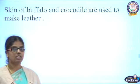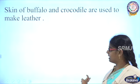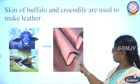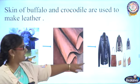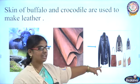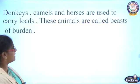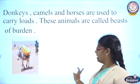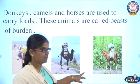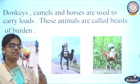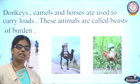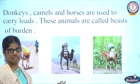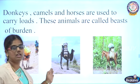From the skin of buffalo and crocodile, leather is prepared. From that leather we get bags, purses, belts, and jackets. Some animals like donkey, horse, and camel help us carry loads from one place to another. See how the donkey carries loads. These animals are called beasts of burden — they carry loads from one place to another.